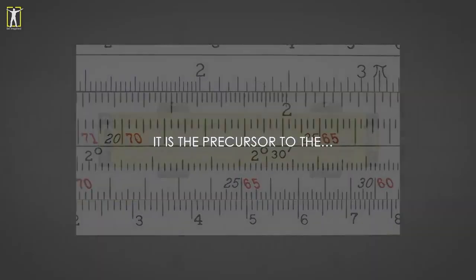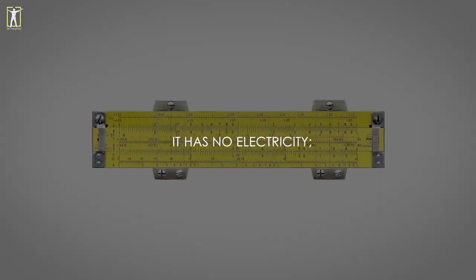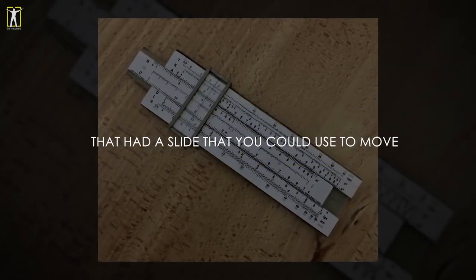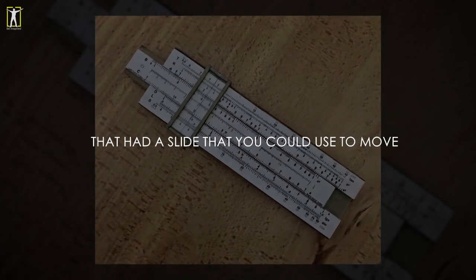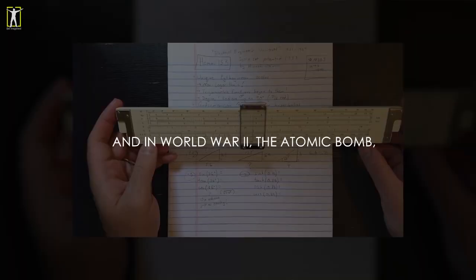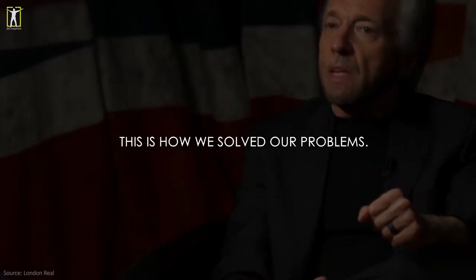Some of our viewers don't even know what a slide rule is. It is the precursor to the calculator. It has no electricity—it is a gadget that looked like a ruler with a slide that you could move and correlate certain numbers. This is the way engineering happened in World War II—the atomic bomb.